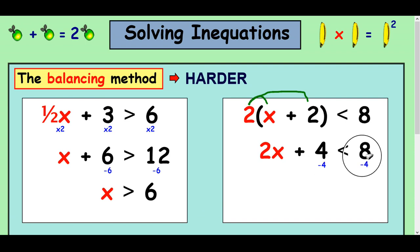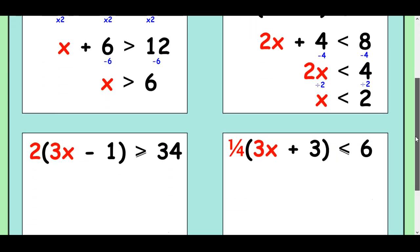And you can already see here, I'm going to take away the 4 from both sides to leave me with x's. So I've got 2x is less than 4. And then half it to finish, divide by 2 on both sides, x is less than 2. So these techniques are just exactly the same as the equation techniques, and we're just applying it to inequalities.